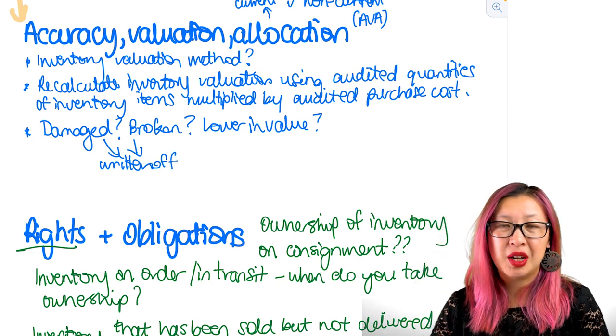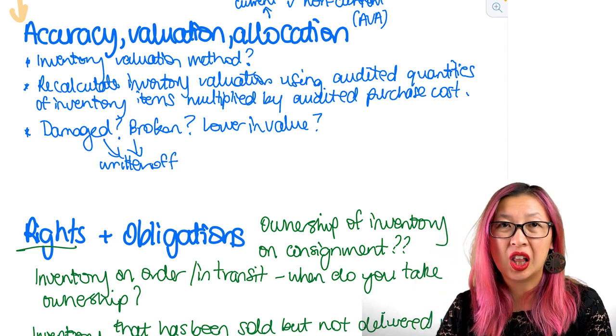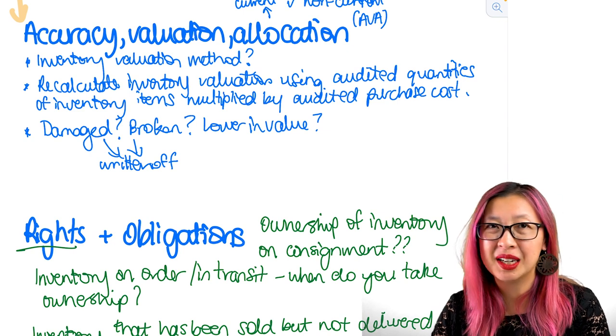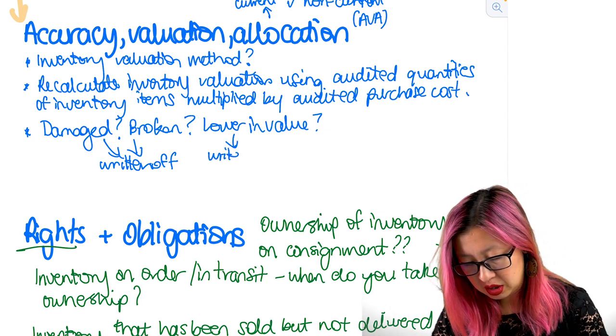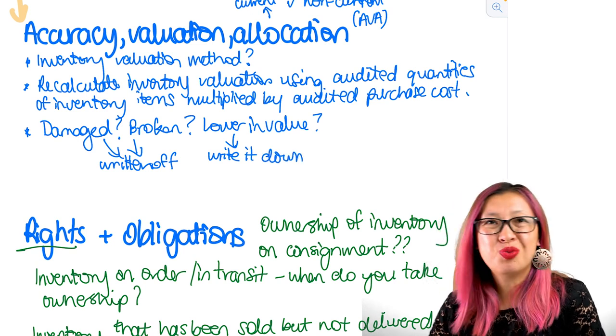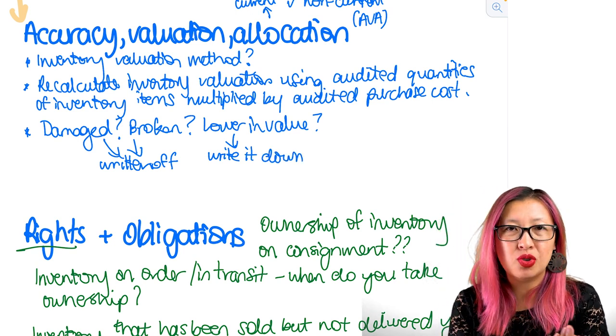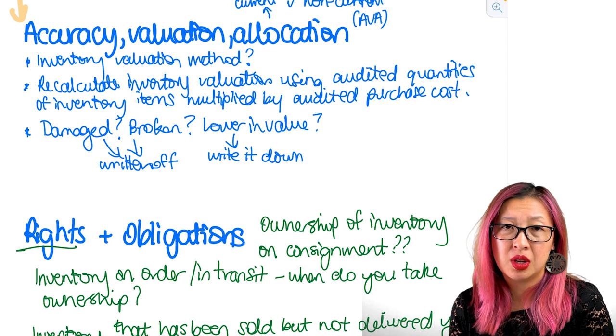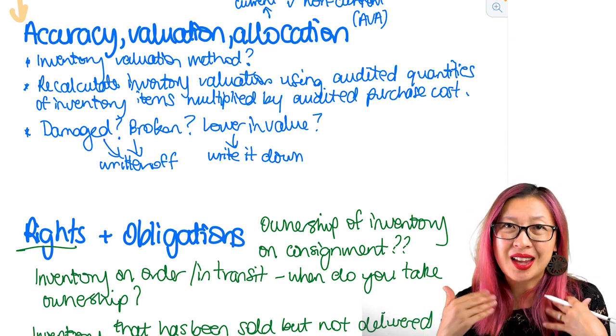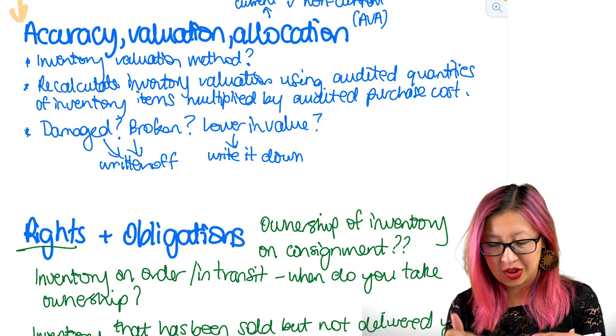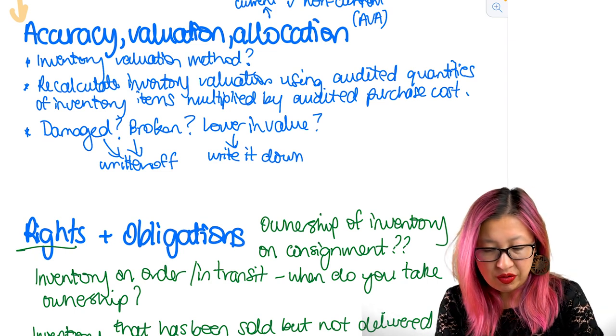And we also have to make sure that for any inventory that has declined in value, it's not popular anymore, it's out of fashion, that we need to write it down. Now the general retail rule is that you buy something you sell it for at least four times the price. So it's pretty rare that inventory is going to go down such a significant amount that you're going to need to write it down in value.